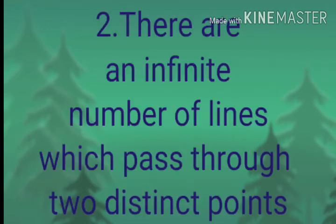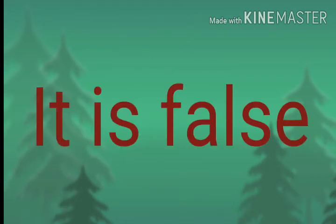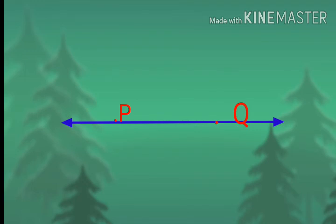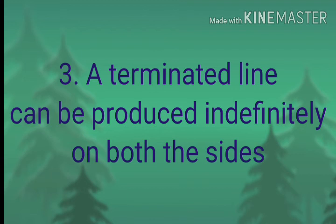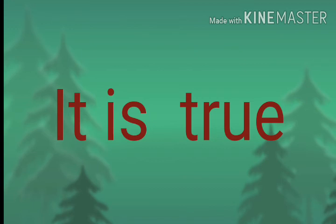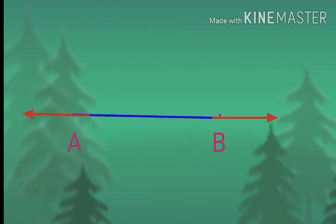The second sub-question: there are an infinite number of lines which pass through two distinct points. It is also false, because through two distinct points we can draw only one line. The third sub-question: a terminated line can be produced indefinitely on both the sides. It is true. From the figure, AB is the terminated line that can extend to both sides.